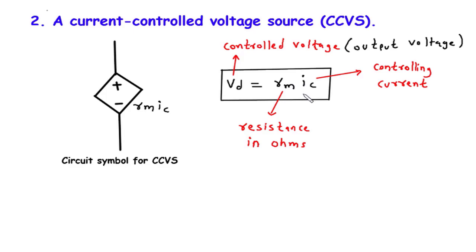In other words, as the controlling current varies, the voltage across the CCVS will change proportionally. The resistance RM determines the proportionality between the controlling current and the resulting voltage across the CCVS. By adjusting the value of RM, we can control the voltage output of the CCVS. A higher resistance will result in a larger voltage for the same controlling current, while a lower resistance will yield a smaller voltage.